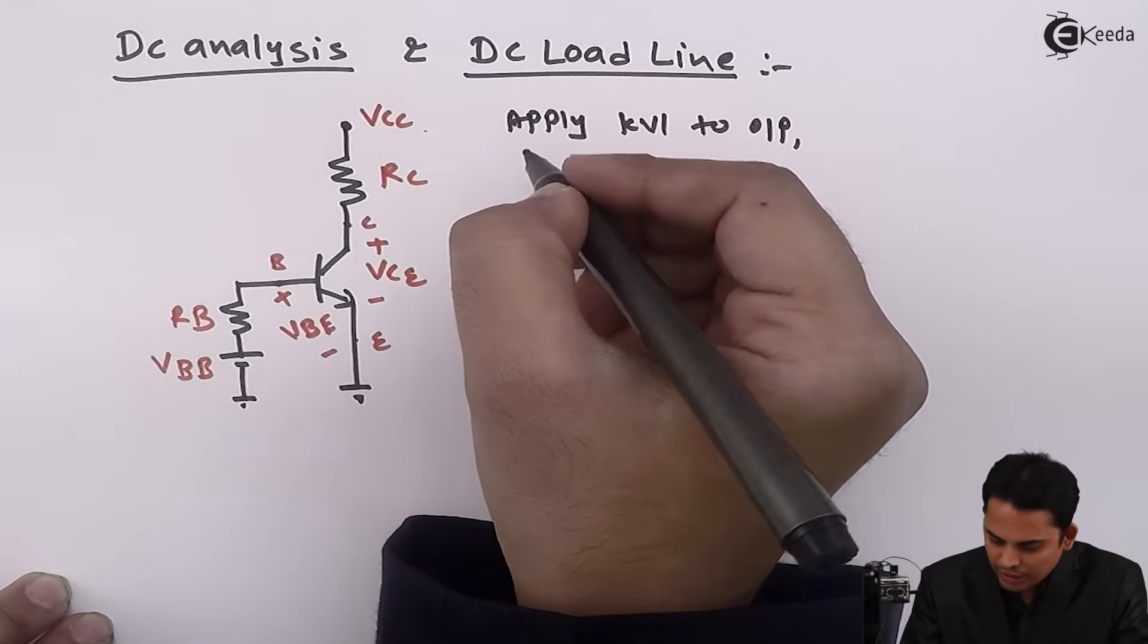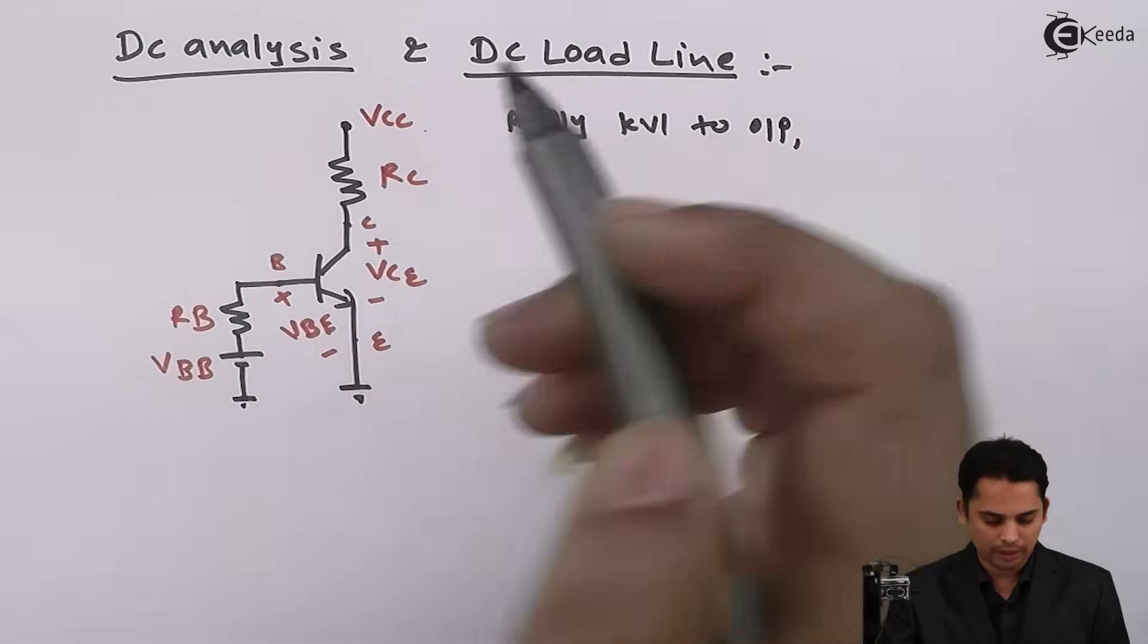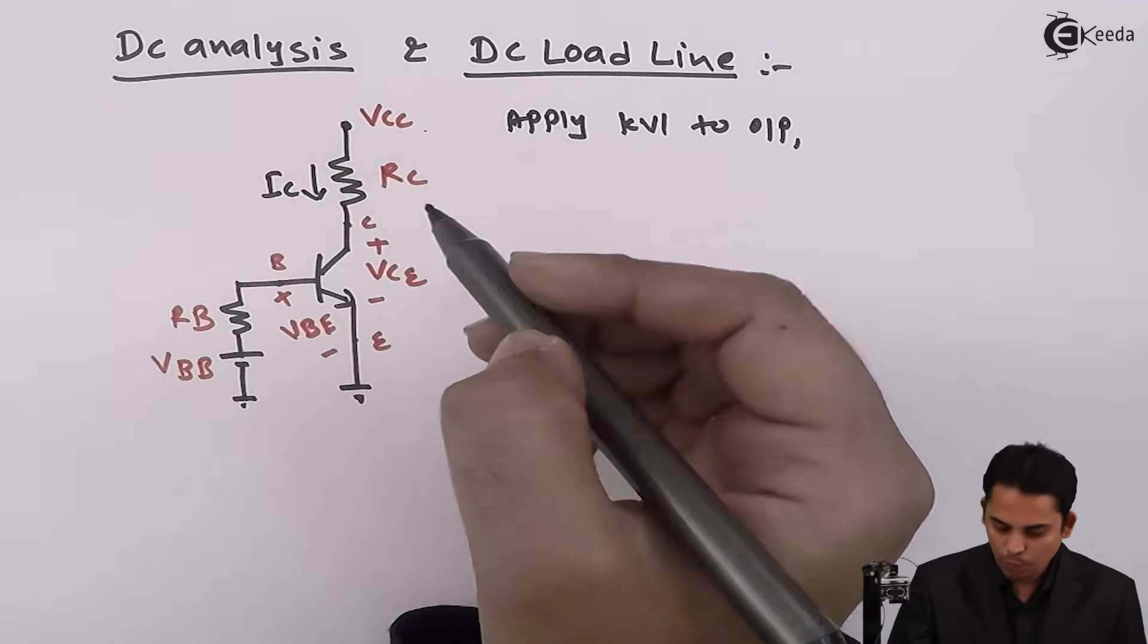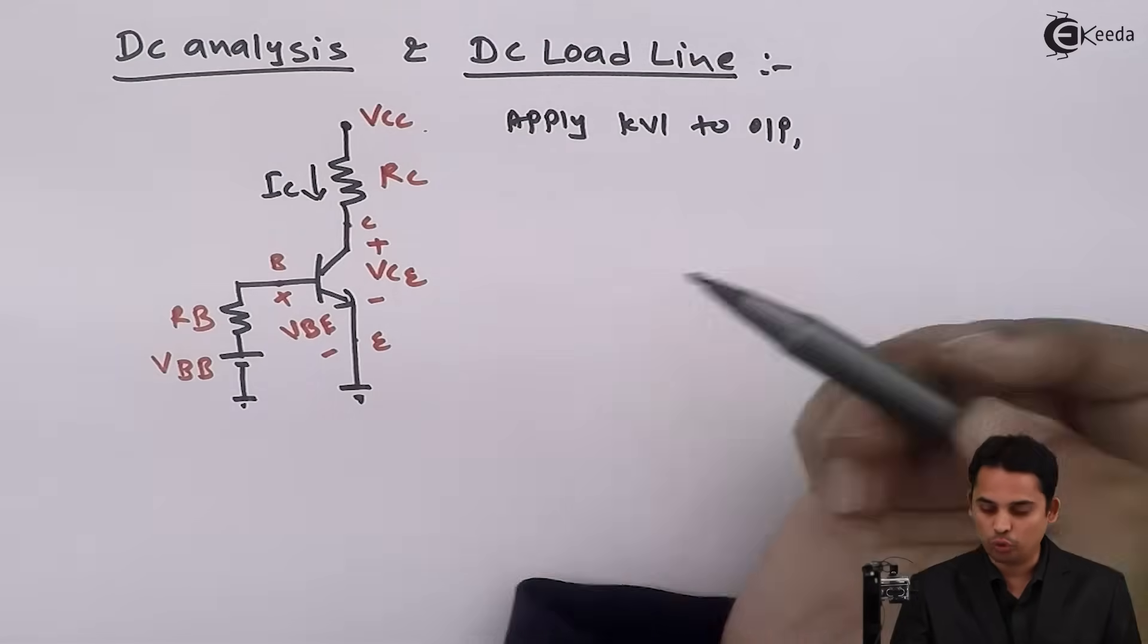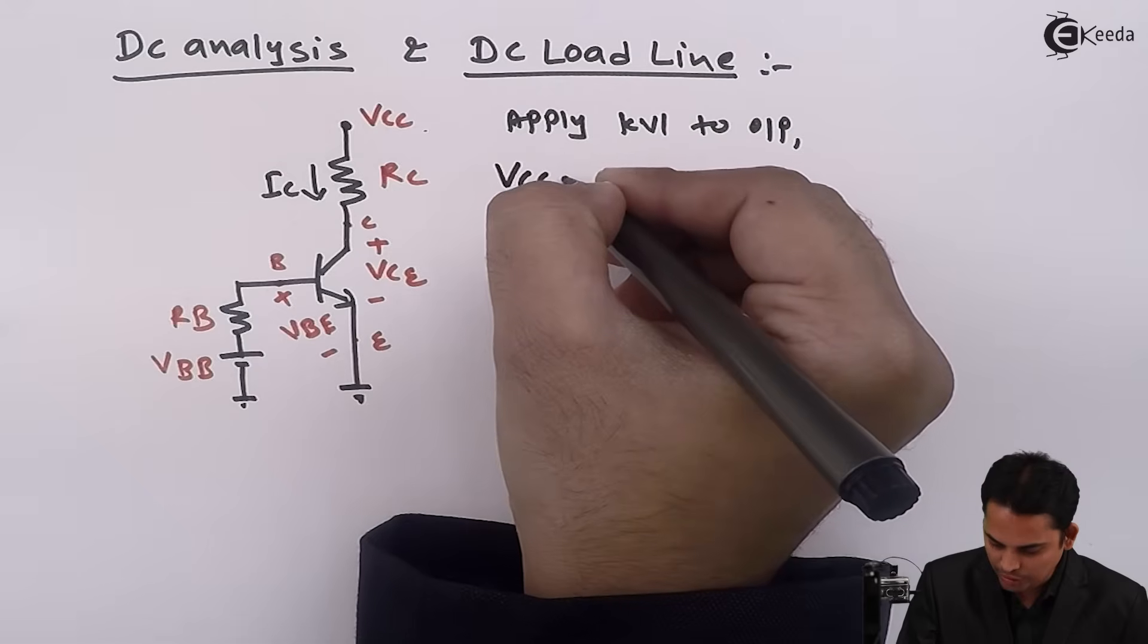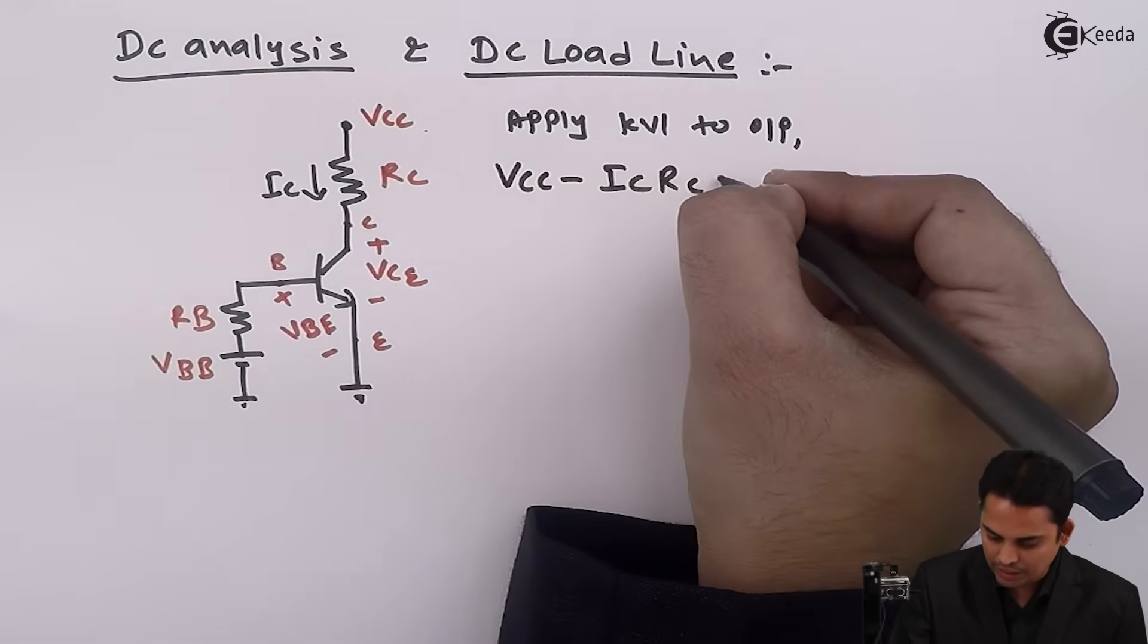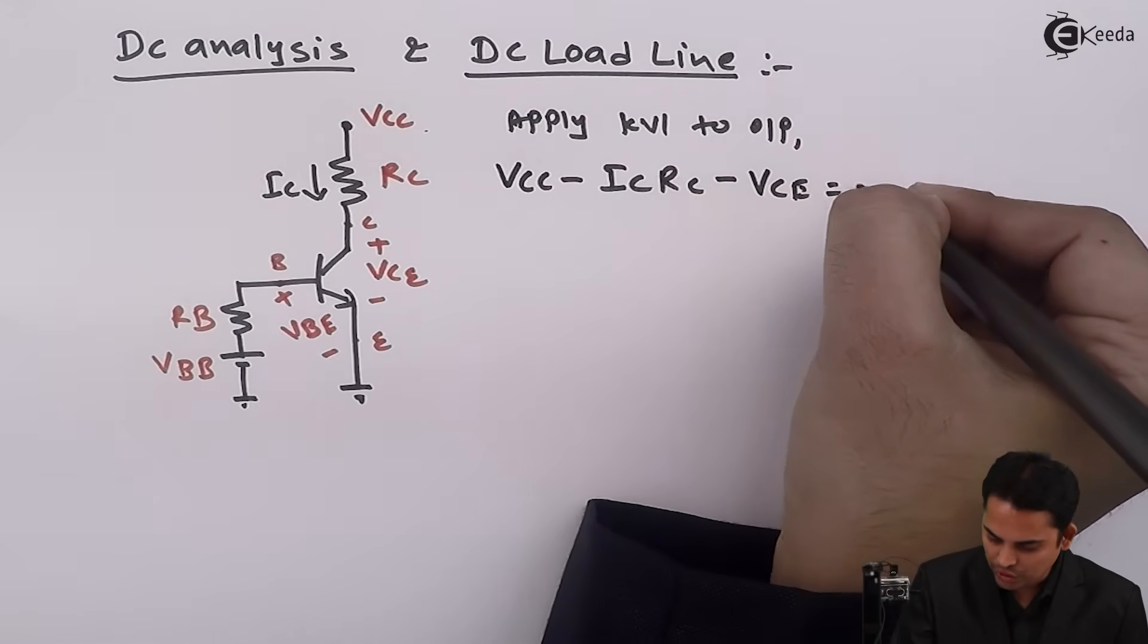We will get equation as VCC minus current flowing from collector, that is IC multiplied by RC, minus VCE is equal to 0. So equation becomes VCC minus IC into RC minus VCE is equal to 0.